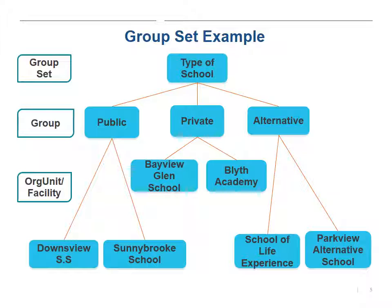In this example, our group set is the type of school. We've got three groups here — public, private, and alternative — and there are likely others. Below that, it's broken down further into individual org units or facilities, such as secondary schools and so on. In this case, the org units are at the level we would call facilities.